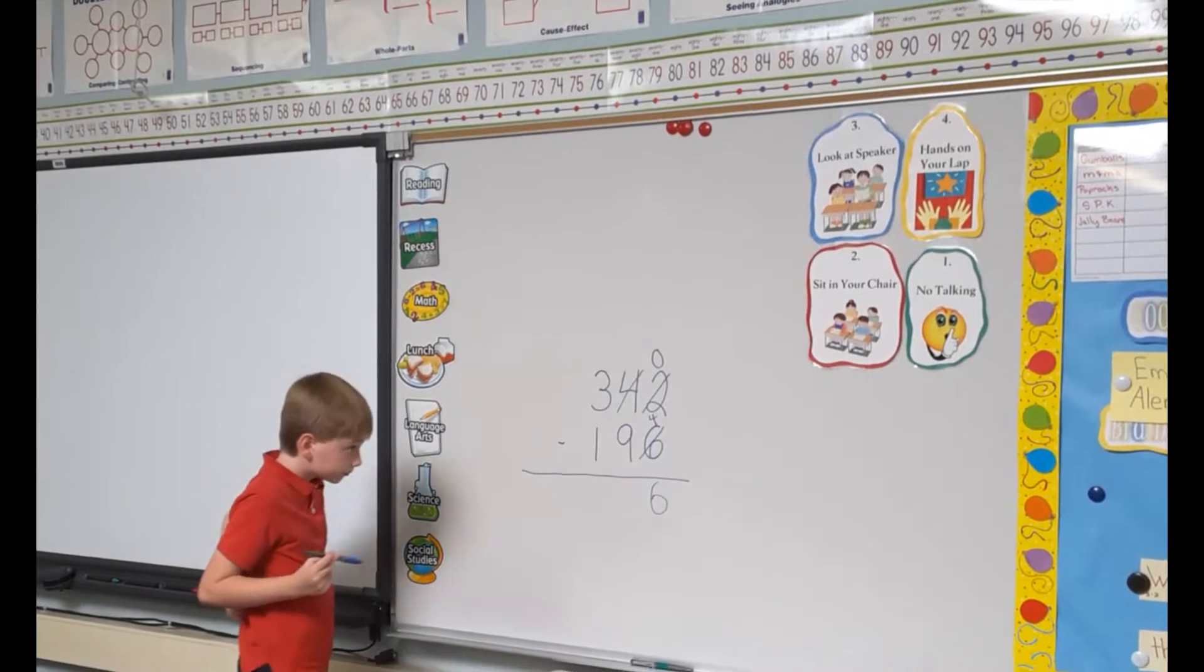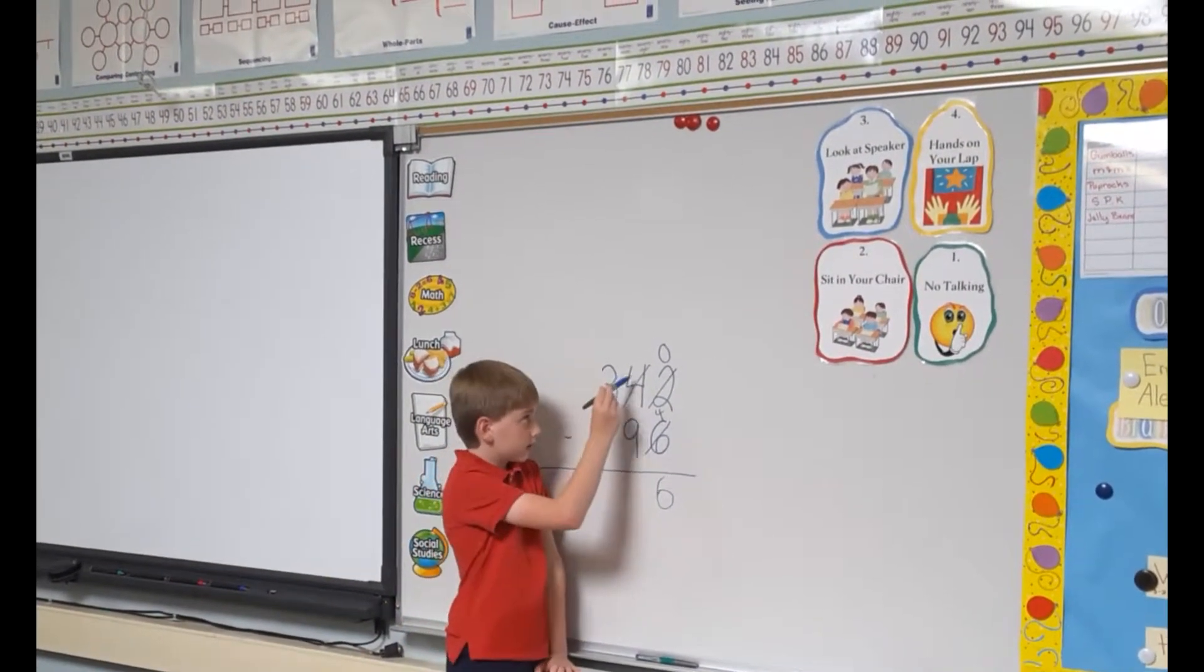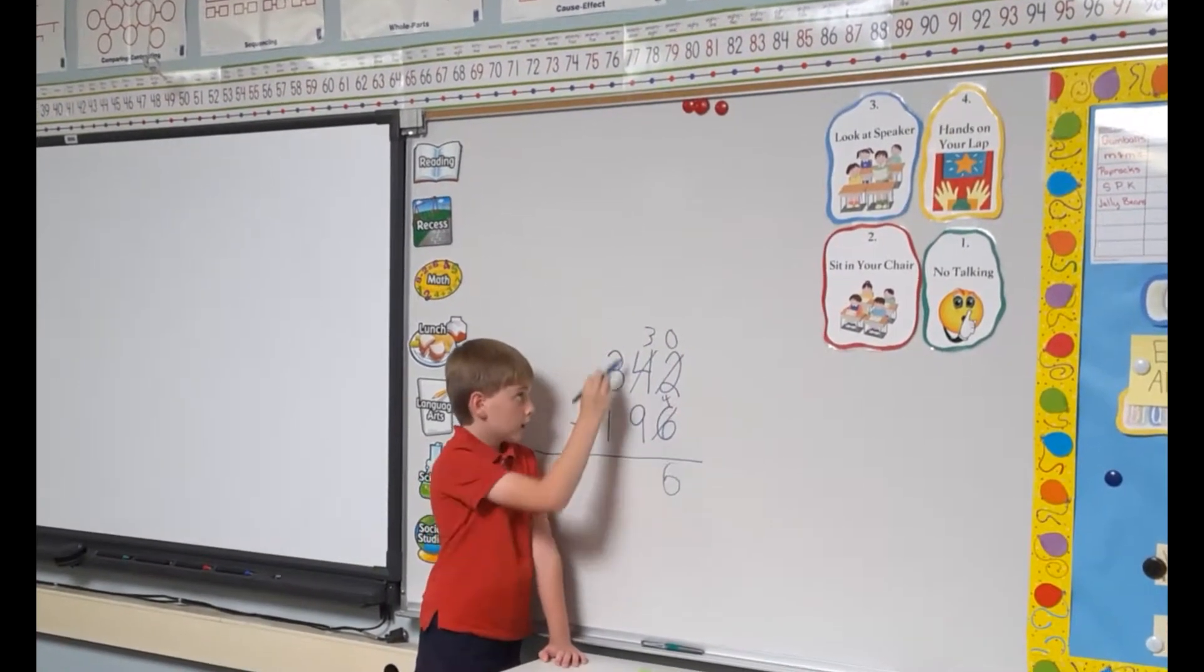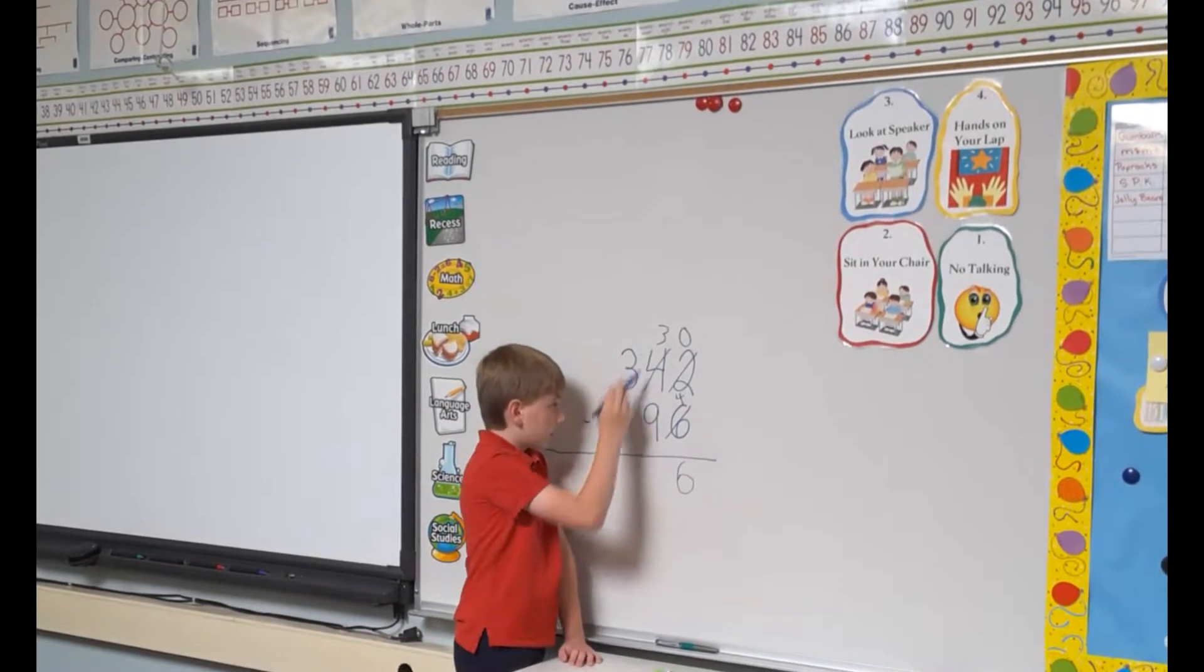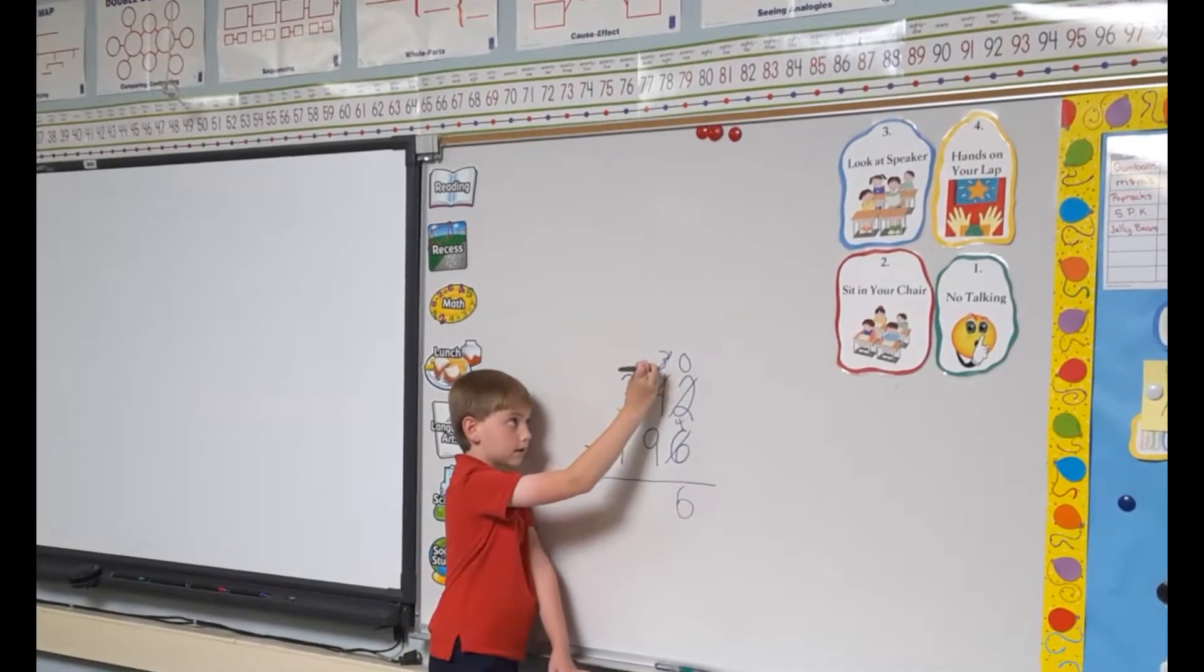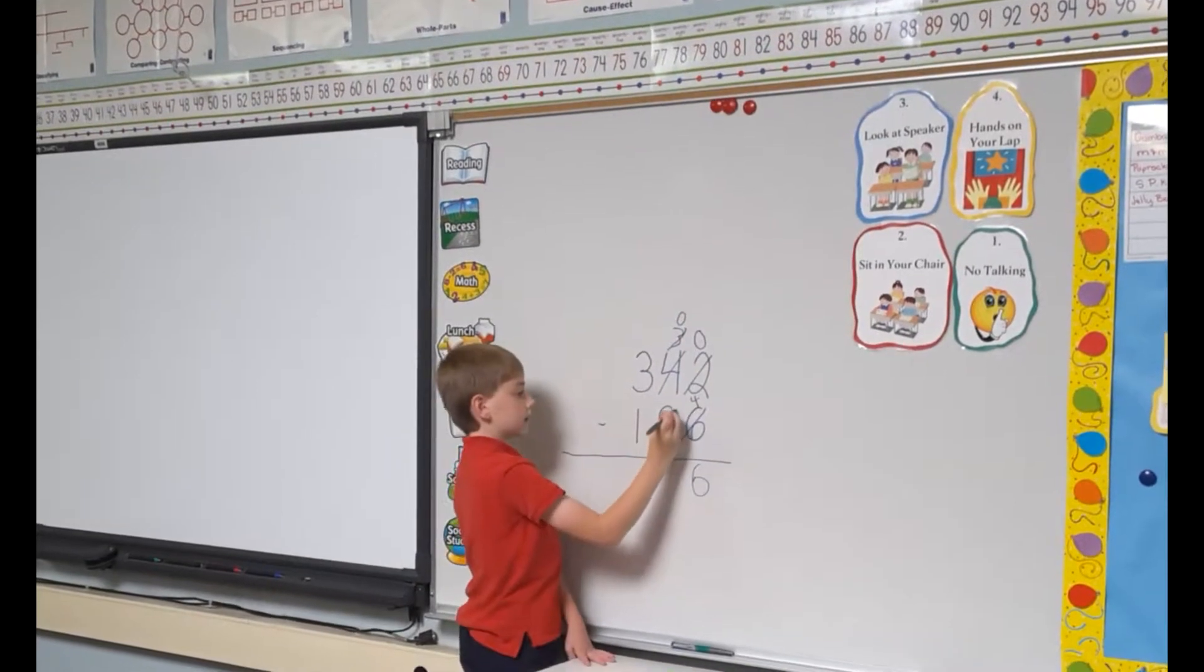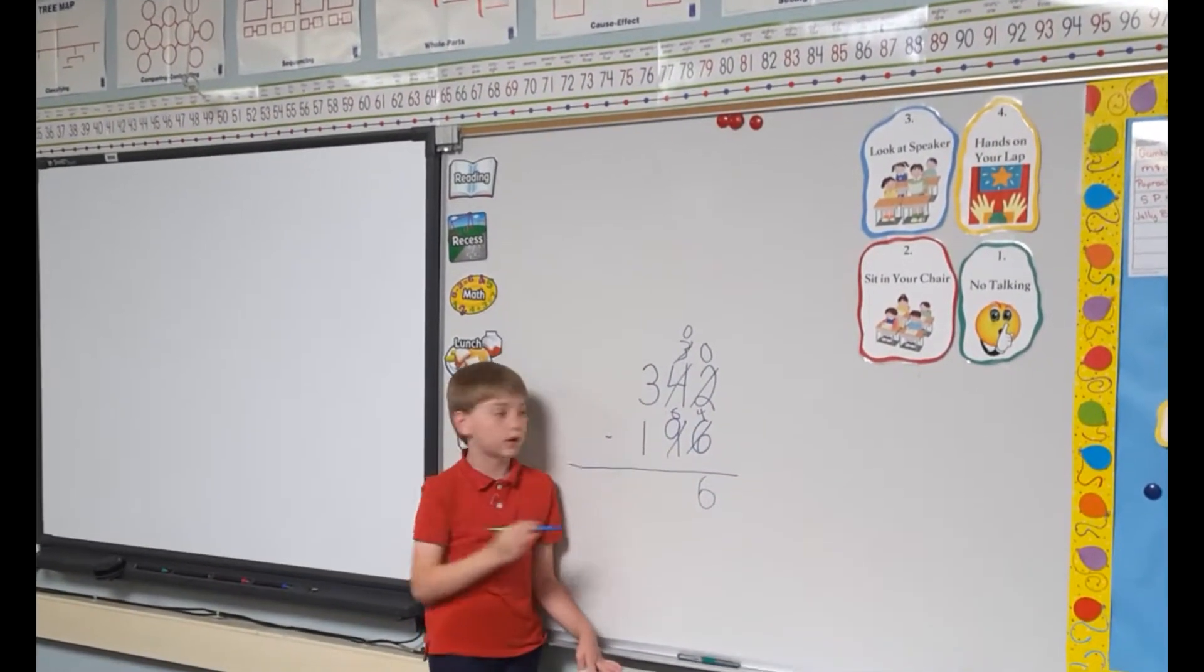So now, since you've got this and you made it a 3 instead of a 4, take away that. How? We'll make this a 0 and make this a 6, just like we did here.